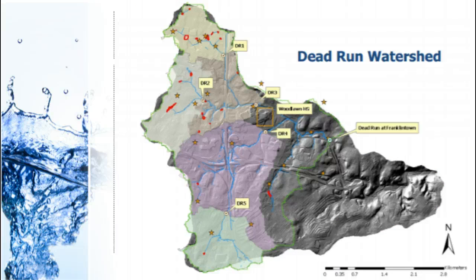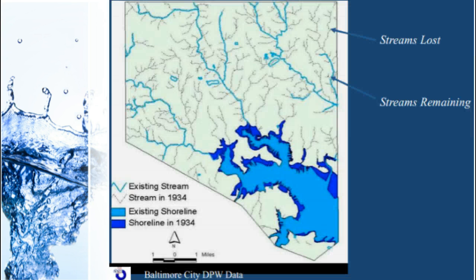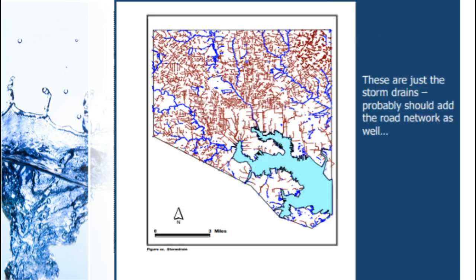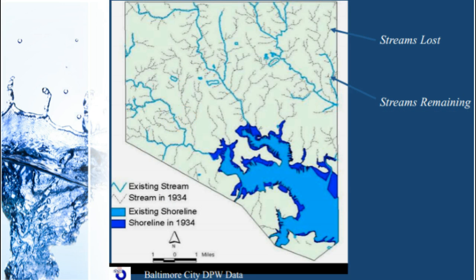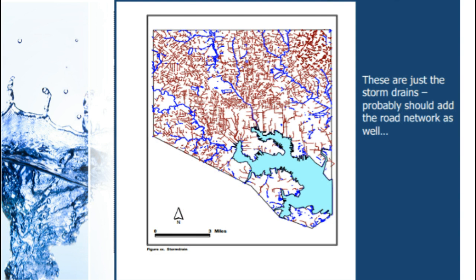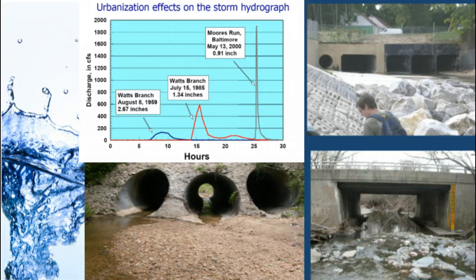An example is the Dead Run watershed in Baltimore County. You can see from the topography of the land where roads and developments have gone in and how they impact this watershed. Looking at Baltimore City, the blue streams are where we still have streams, but dotted lines are areas where we used to have a stream that is now either underground in stormwater management or gone, draining completely differently. All that water that was in rivers is mostly running through storm drains or down roadways, picking up pollutants as it does.